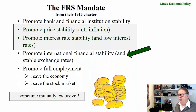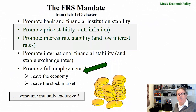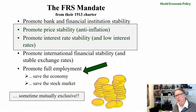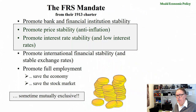They have another mandate to promote international financial stability, which normally implies stable or relatively stable exchange rates. There is also a vague reference in their charter to promote full employment. These days, that seems to be a charter to save the economy and even save the stock market, because basically that's what they've been doing literally since the year 2000. We're going to mostly emphasize the mutually exclusive components of their mandate, but we'll also talk about the full-employment mandate, because that is underway at the current time.